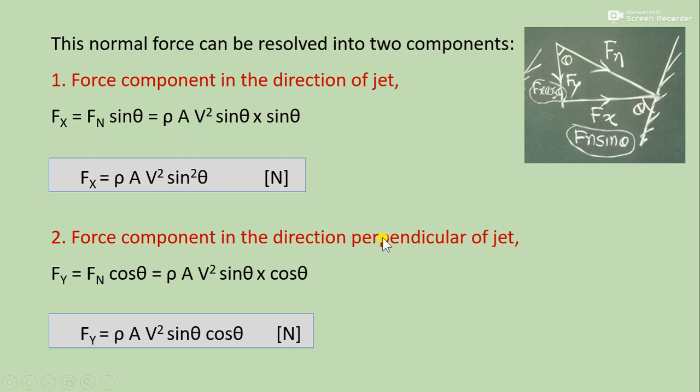Similarly, the component in the direction perpendicular to the jet, that is Fy, is Fn cos θ. So Fn cos θ means ρAV² sin θ times cos θ.